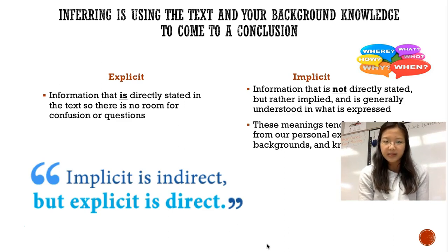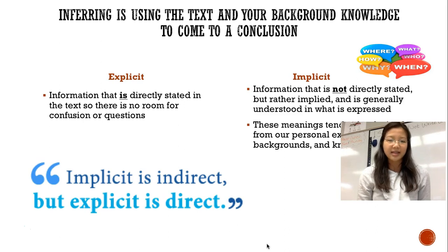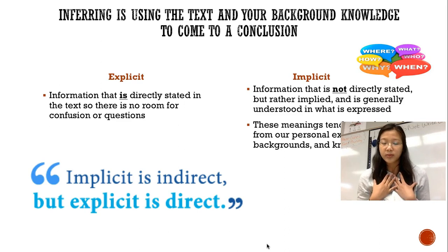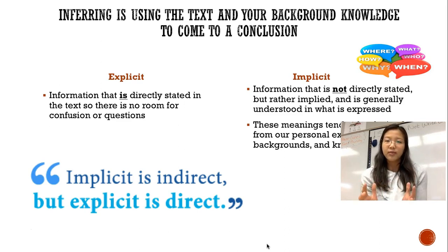What do we mean by this? It means combining both explicit and implicit information. Explicit information is information that is directly stated in the text, so there is no room for confusion or questions. Implicit information, on the other hand, is not directly stated but rather implied, and it's generally understood in what is expressed. These meanings tend to be derived from our own personal experiences, backgrounds, and knowledge. When we're trying to get implicit meaning, we ask ourselves questions such as why, when, and how a case is what it is.